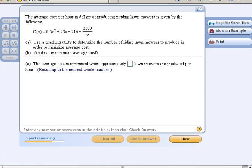This one says the average cost per hour in dollars of producing x riding lawnmowers is given by this function. Now, this C of x represents the cost, and our x values here, if you'll look right up here, it says x is the number of riding lawnmowers that are being produced.